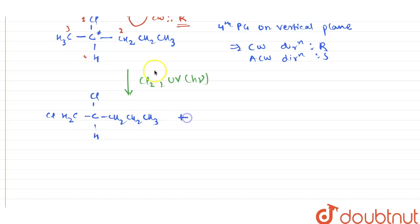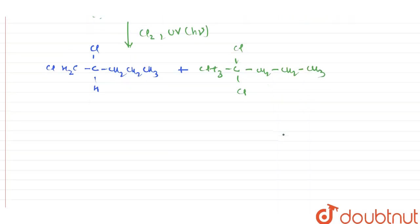Now, the second product would be this chlorine is replaced by this hydrogen. So the product which I am going to get: CH3, CH2, C-Cl, again Cl, CH2, CH2 and CH3. So this is the second product which I can obtain.